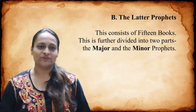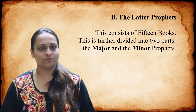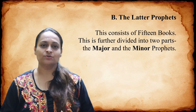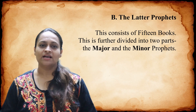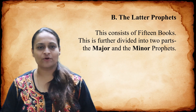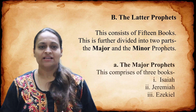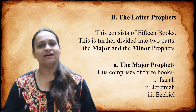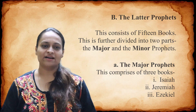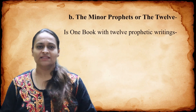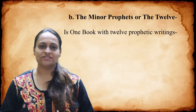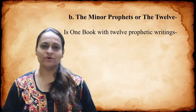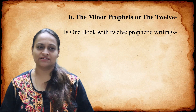The latter prophets consists of 15 books, further divided into two parts: the major and the minor prophets. The major prophets comprises three books: Isaiah, Jeremiah, and Ezekiel. The minor prophets, or the Twelve, is one book with 12 prophetic writings.